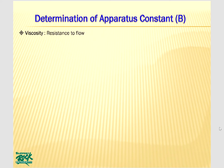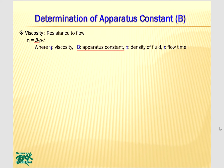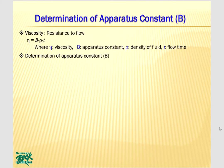Viscosity is defined as the resistance to flow, and it is directly proportional to the density of the fluid and to the flow time. So an equation of viscosity can be written as: viscosity Eta equals proportionality constant B times density of fluid rho times flow time T. The proportionality constant B is called the apparatus constant and it may be different from viscosimeter to viscosimeter. So you have to determine the apparatus constant first before you use a viscosimeter. I will show you how to determine the apparatus constant B.